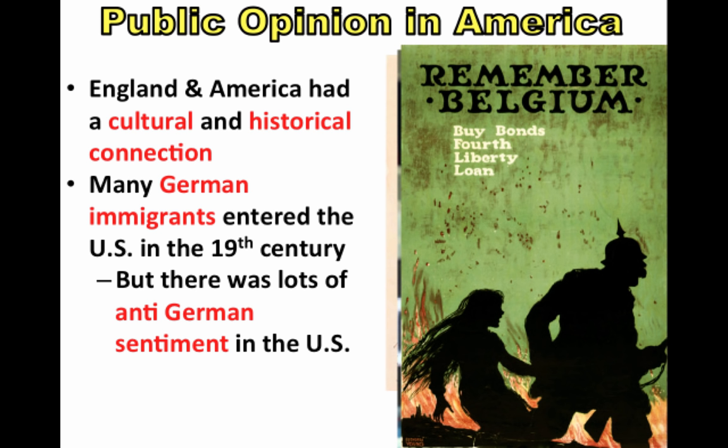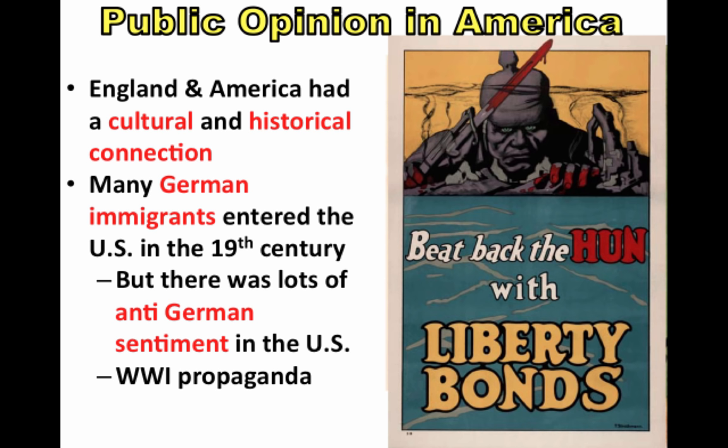There was also a lot of anti-German sentiment in the United States. Reports of German atrocities, their invasion of neutral Belgium, and anger over Germany's autocratic, non-democratic government all fueled this. Adding to it was propaganda — a lot of it coming out of England but also produced in the United States — where Germans were portrayed as barbarians and called derogatory names like 'the Huns.' All of this put American sympathy firmly in the Allied war camp.